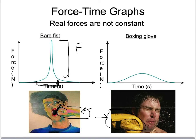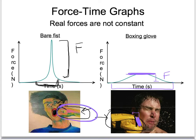But if you hit someone with a boxing glove on, there is some space between your actual fist and their face — all that padding. Because there's a lot of space there, your fist covers some distance and takes a longer time to stop. Since your fist takes a longer time to stop when wearing a boxing glove, their face only needs to apply a smaller force to stop your fist. Longer time to stop your fist means smaller force from their face; very short time means very big force. Which means they get hurt more when you're not wearing the boxing glove than when you are.